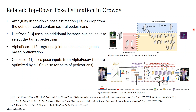Interestingly, there is also an ambiguity issue in top-down pose estimation, as an image crop might contain several persons. In that case, the target pose might become ambiguous. HintPose solves this issue by adding an additional instance cue as input to the network to select the target pedestrian. They use a bottom-up method to retrieve this instance hint, which costs additional runtime and the instance cues themselves might be error-prone.